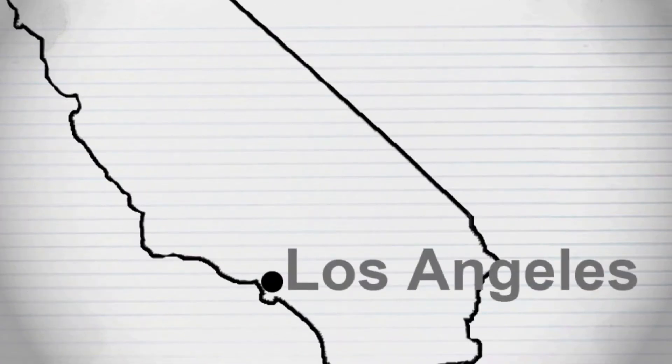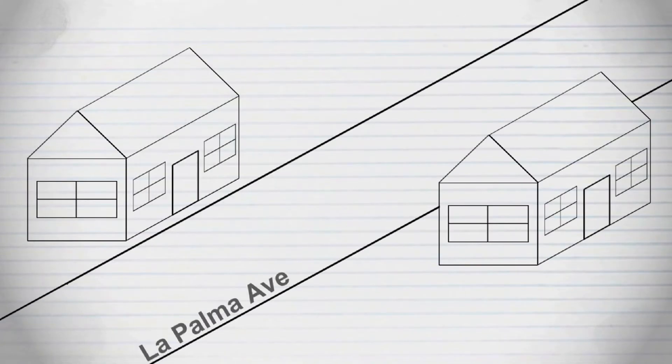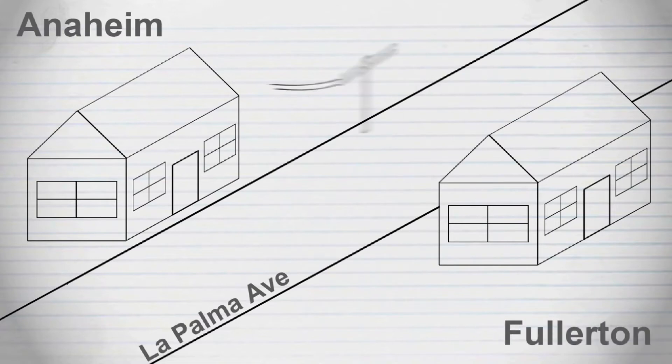Forget solar for a second. Let's look at an example of something that happens in the Los Angeles area all the time. There's this one street called La Palma Avenue, and it's on the border between Anaheim city and Fullerton city. Anaheim has super cheap electricity; on the other side of the street, Fullerton's got expensive electricity.